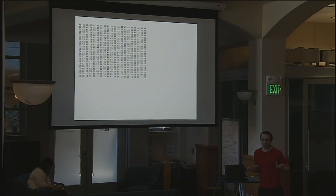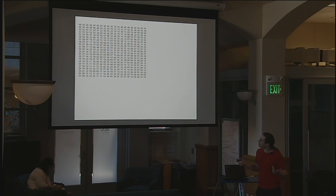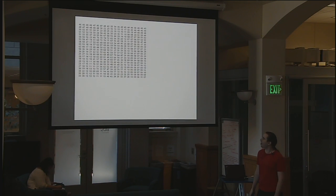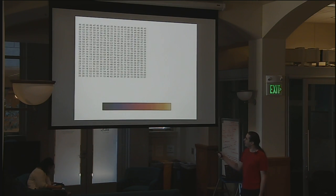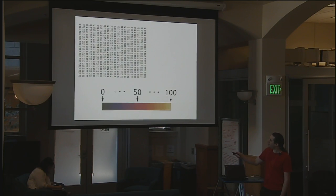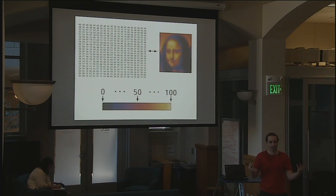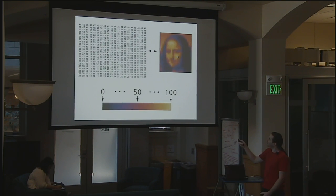Color maps are pretty important in science because you have this problem: you gather a bunch of data — there are 440 numbers there — and you just look at that and it's like, what do you do? You can't make any sense of this. But if you have some nice ordering of colors and you map different values to those colors, suddenly you can see what's going on. The color map is the interface between your data and your brain.